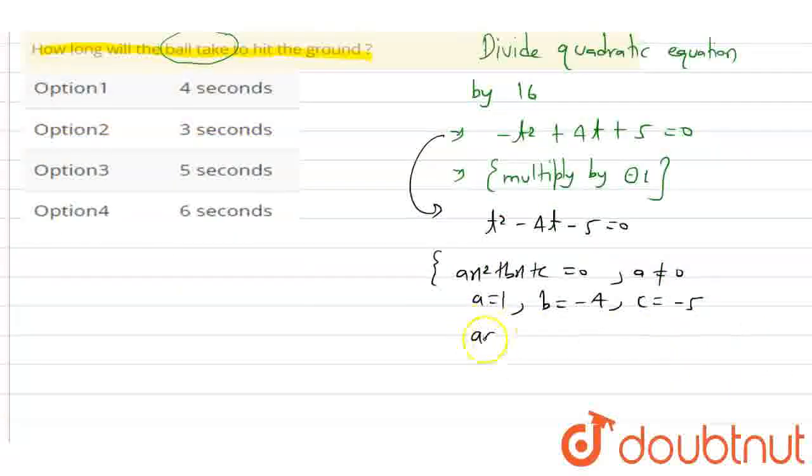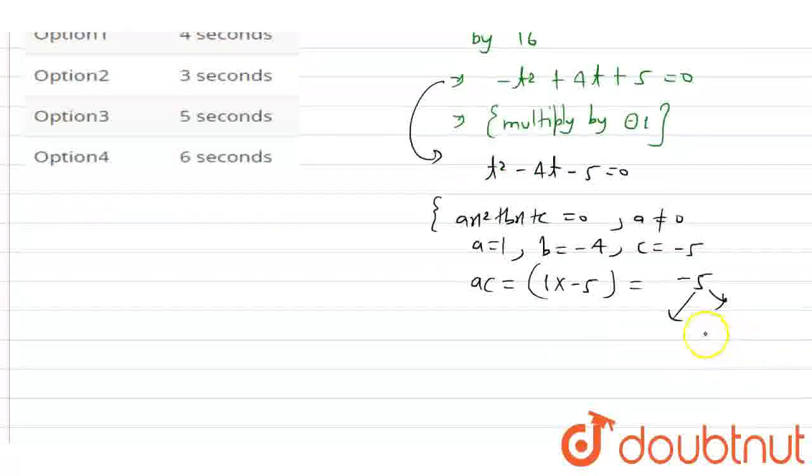I will use the factorization method. We need two numbers that multiply to minus 5 and add to minus 4. Those are minus 5 and 1.